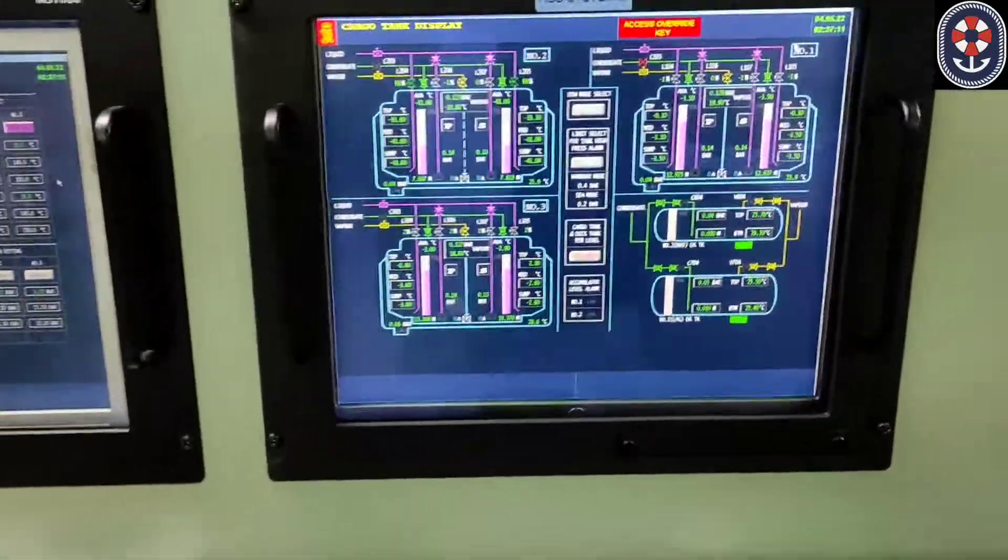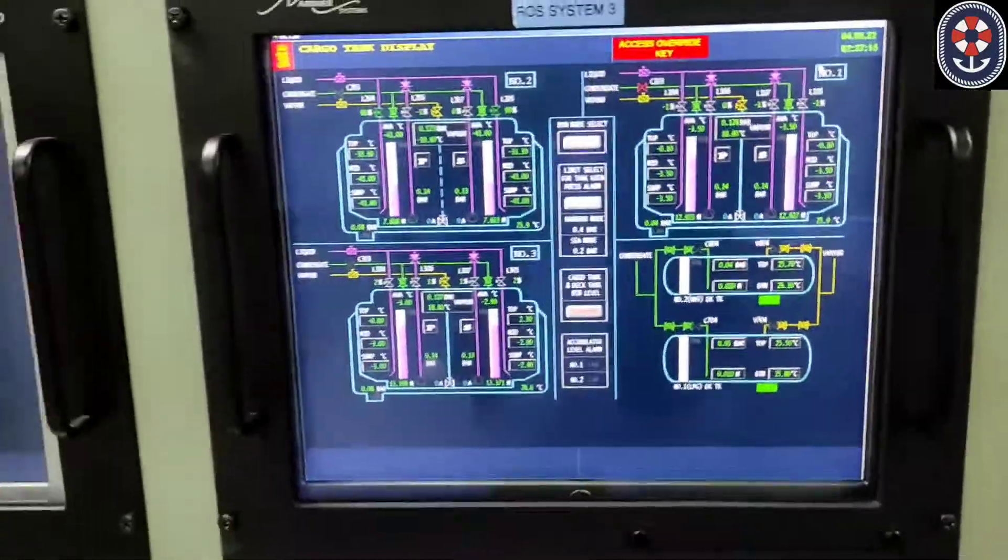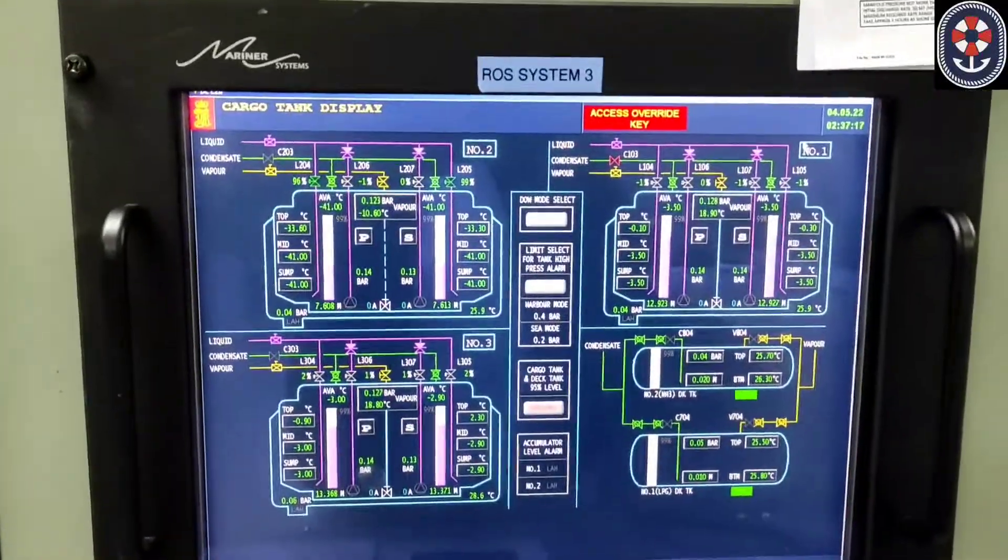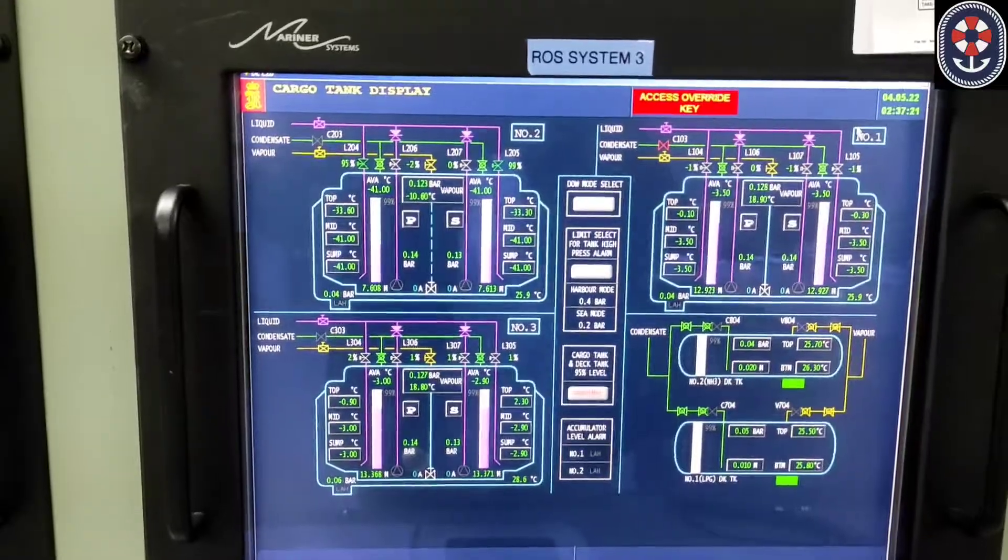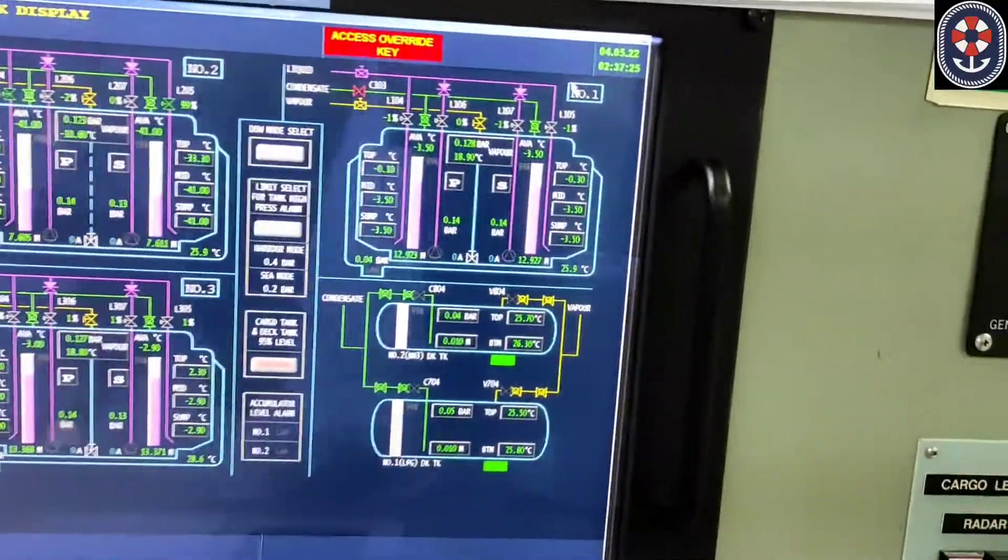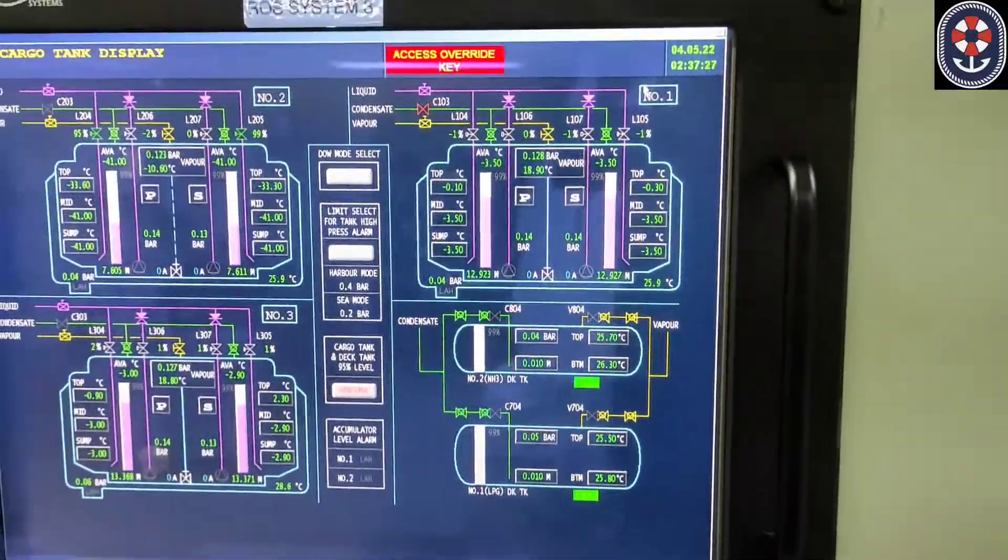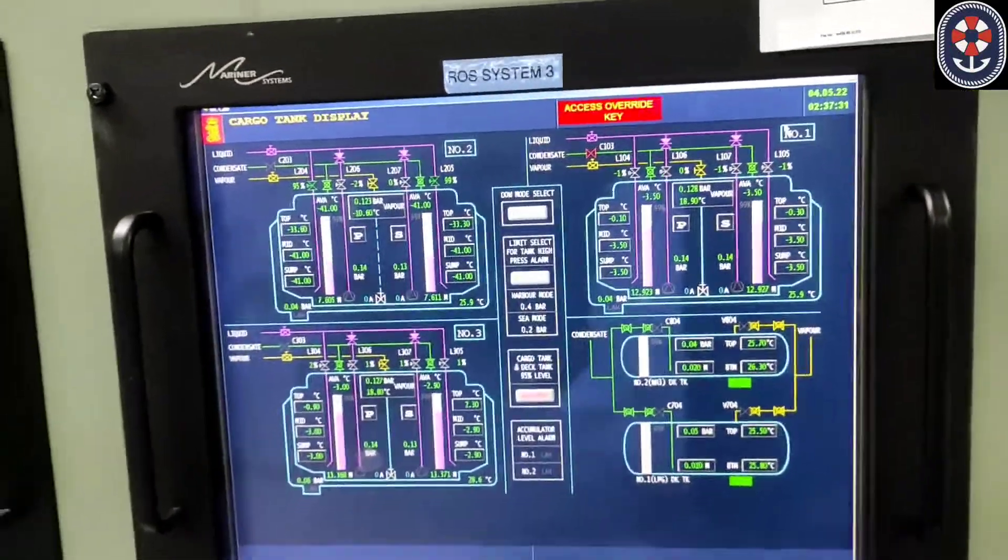Then we come to—there are two screens on this, one is on the bridge and one is in the engine room. Here you can see the tanks. There are basically three tanks here: one, two, three. Tank one is divided into port and starboard, tank three is divided into port and starboard, and tank two is one center tank. And there are two tanks on the deck, which are port and starboard deck tanks.